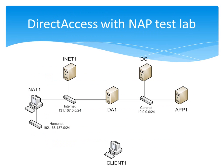Here we see the configuration of the DirectAccess test lab consisting of four server computers, two client computers, and three different subnets. For DirectAccess with NAP, we're going to configure the following. On APP1, our application server, we're going to make it a NAP certification authority, or NAP CA. The NAP CA's role is to issue health certificates to compliant NAP clients. A health certificate is a digital certificate with the system health enhanced key usage, or EKU.